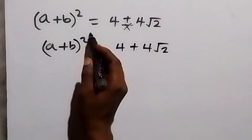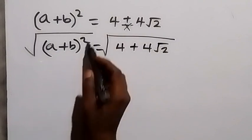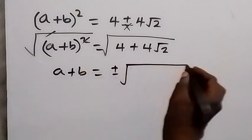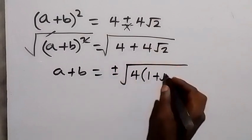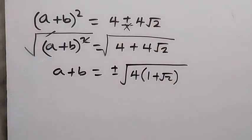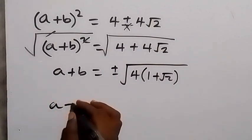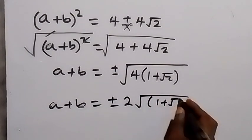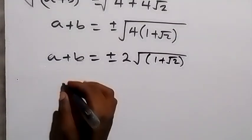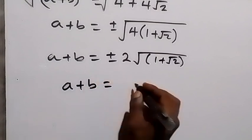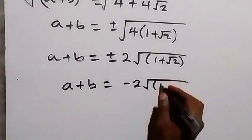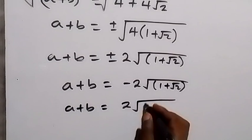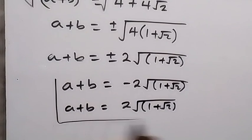To remove this square, we find the square root on both sides. The square and square root cancel on the left, and we have a plus b equals plus or minus the square root of 4 into bracket 1 plus root 2. The square root of 4 is 2, so we have a plus b equals plus or minus 2 root of 1 plus root 2. Therefore, a plus b equals negative 2 root of 1 plus root 2, or a plus b equals 2 root of 1 plus root 2. These are the values of a plus b from this problem.